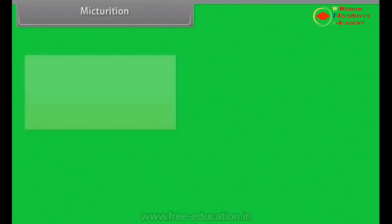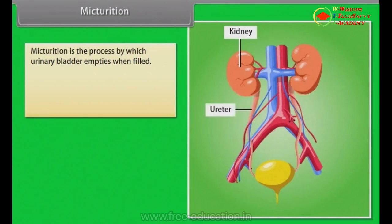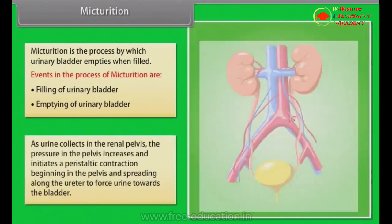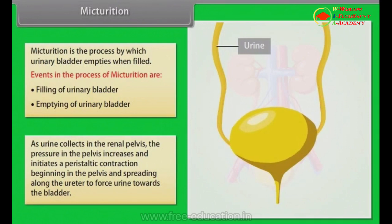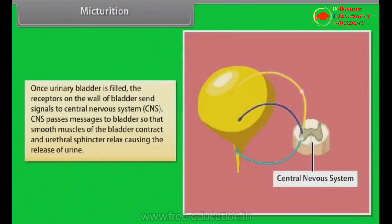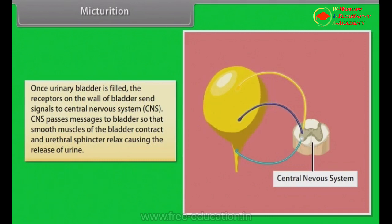Micturition. Micturition is the process by which the urinary bladder empties when filled. Events in the process include filling and emptying of the urinary bladder. As urine collects in the renal pelvis, pressure increases and initiates a peristaltic contraction beginning in the pelvis and spreading along the ureter to force urine towards the bladder. Once the urinary bladder is filled, receptors on the bladder wall send signals to the CNS, which passes messages to the bladder so that smooth muscles contract and the urethral sphincter relaxes, causing the release of urine.